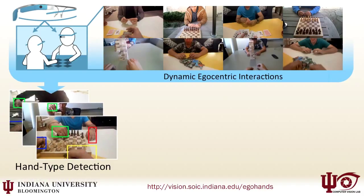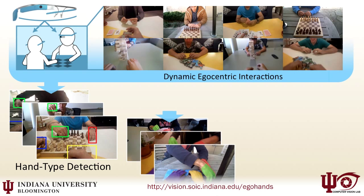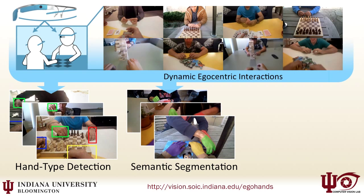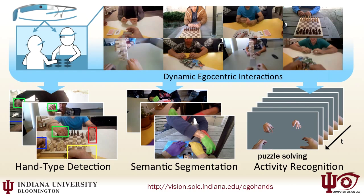We use a CNN model with a lightweight region proposal method to robustly detect and distinguish hands. We show how to generate accurate pixel-wise hand segmentations from these high-quality detections, and finally we investigate whether segmented hands alone can accurately distinguish between first-person activities.